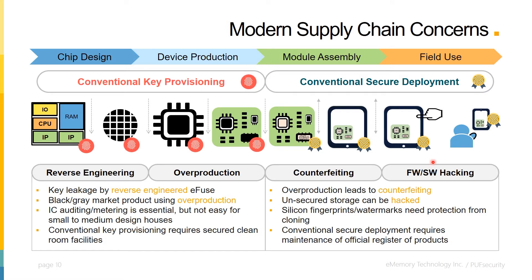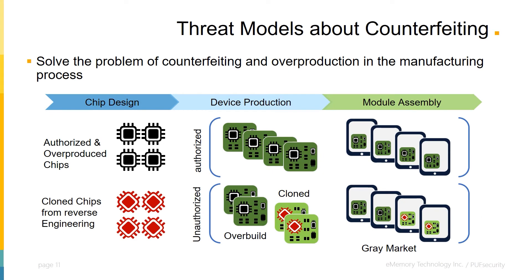In the next slide, we focus on the issue of counterfeit goods in the supply chain, a problem that represents a company's lost income when such goods are sold on the gray or black market. Overproduced or cloned chips can leave the official supply chain and enter a parallel counterfeit chain, propagating downstream into finished goods sold in unauthorized markets. To mitigate the threat of counterfeit products, both overproduction and cloning need to be controlled, and theft of intellectual property through reverse engineering or other means must be prevented.